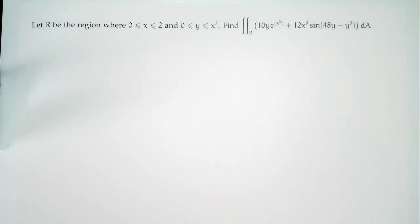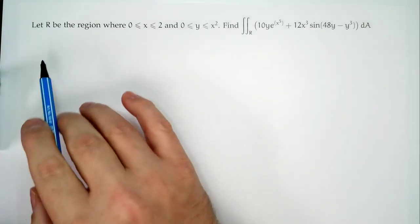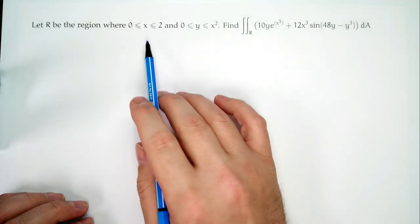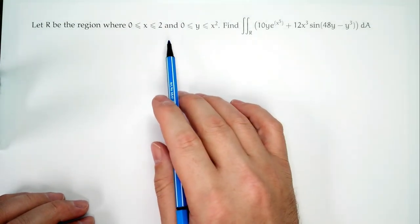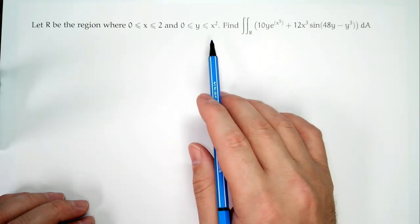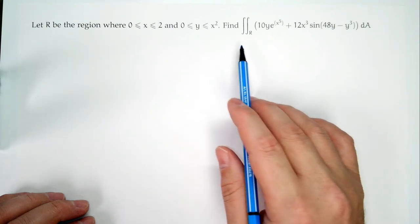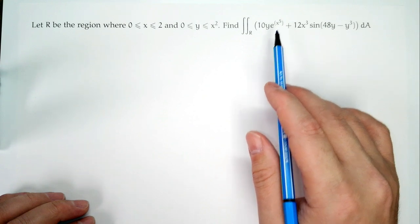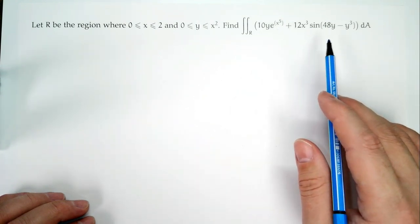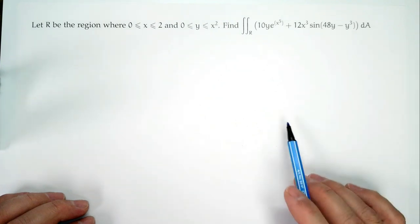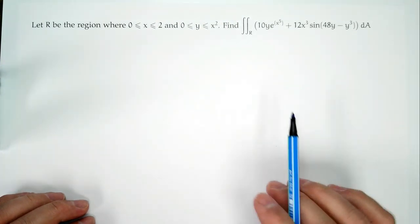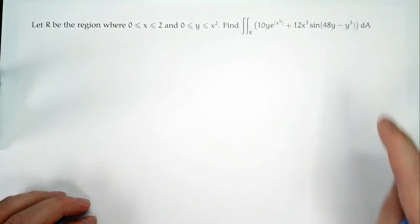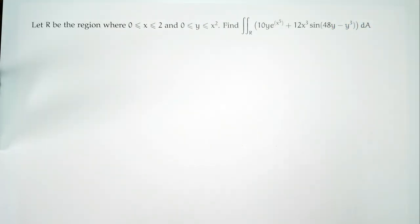Let's begin like we often do — start with the problem. Let R be the region where 0 ≤ x ≤ 2 and 0 ≤ y ≤ x². We want to find the integral over region R of 10y·e^(x⁵) + 12x³·sin(48y − y³) dA. Notice we're integrating over this region dA — they haven't told us the right way to integrate, so should we integrate first with respect to x or with respect to y?